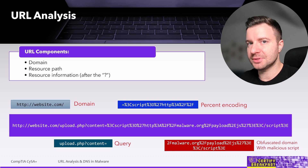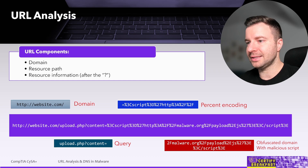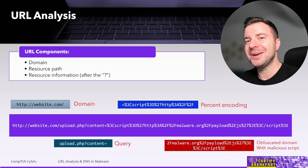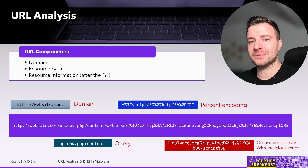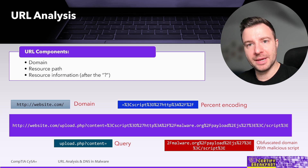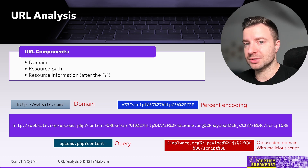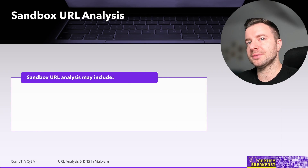There are also some additional components that can be found inside a URL. You've probably seen anchors — the hashtag or pound sign — which points to a specific location within an HTML document or a section in a page. But it can also be abused to inject some JavaScript code.